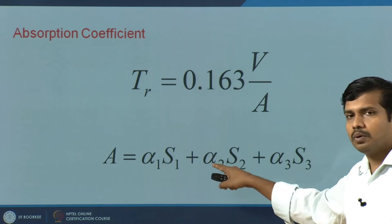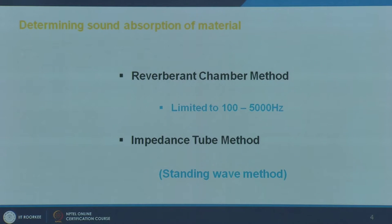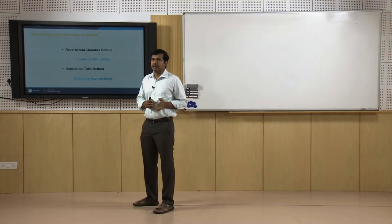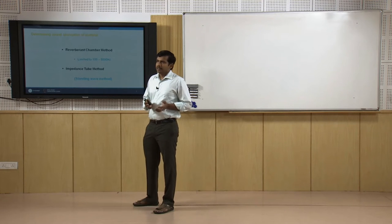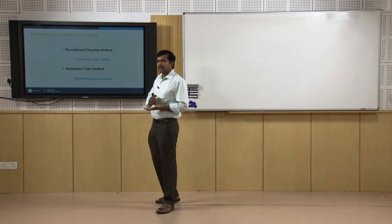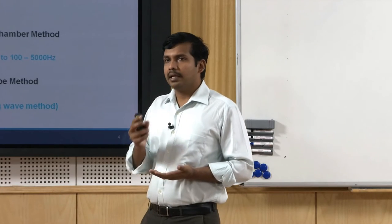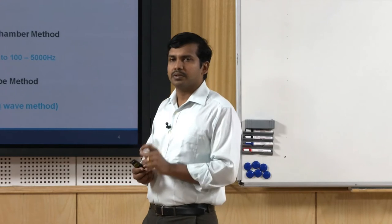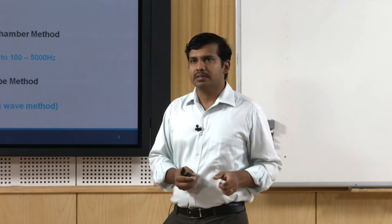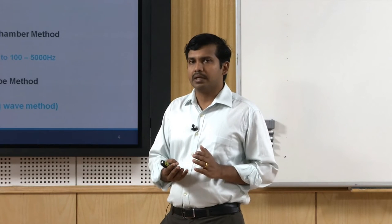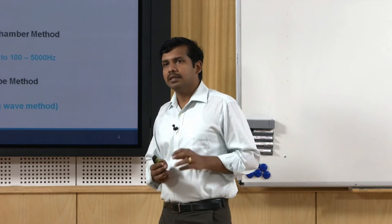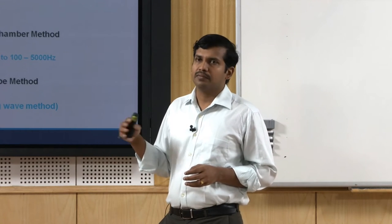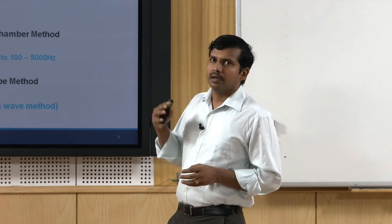Now we will look more closely at what alpha actually means. Alpha is the absorption coefficient of a particular material. It ranges from 0 to 1 — 1 is 100 percent absorbing, 0 is 100 percent reflecting with no absorption. This absorption coefficient varies with respect to frequency. Ideally, for a real performance-based selection, it is better to look at absorption at low frequencies around 63 or 125 Hz, mid frequency around 1000 Hz, and high frequency around 8000 Hz.